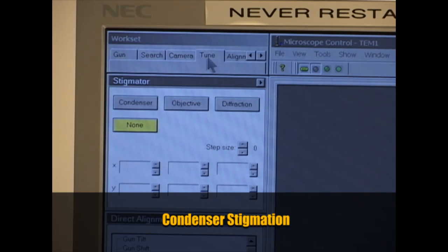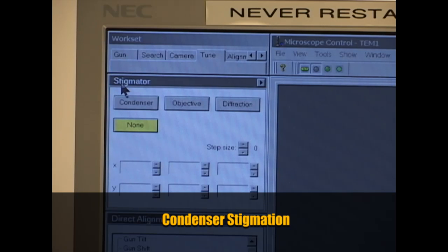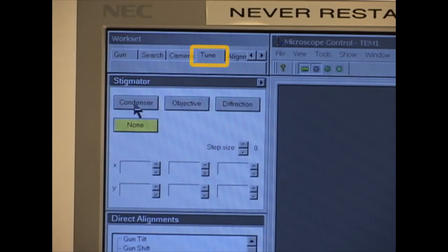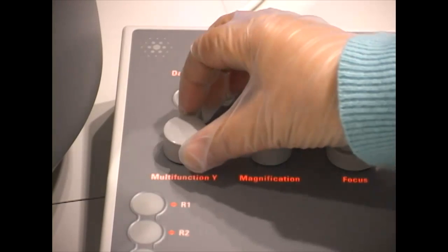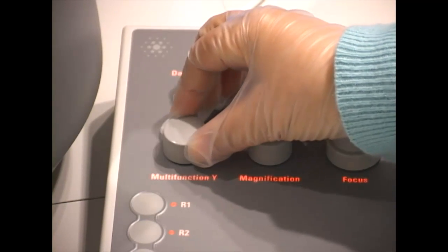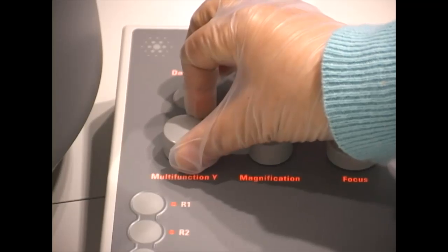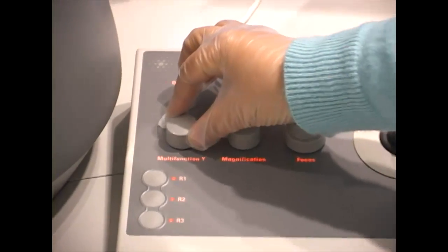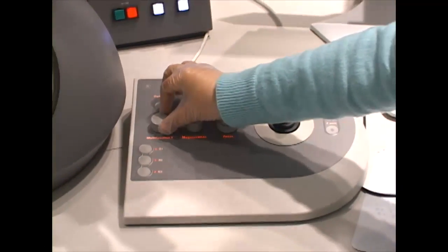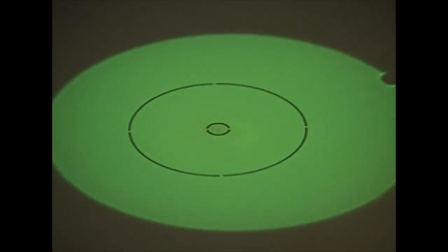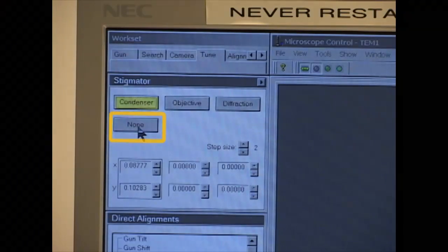Next, we adjust the condenser stigmation. Click on Tune and Condenser from the Stigmator menu. Use the multifunction knobs, MF, on either side of the scope to adjust the condenser stigmation in both X and Y directions to ensure the beam is round and expands concentrically. After you are finished, be sure to click None, otherwise the multifunction will continue to control the stigmation.